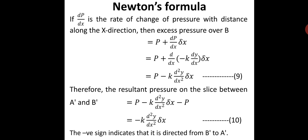The excess pressure over section A equals p, while the excess pressure over section B is p minus K times d²y/dx² times delta-x. Therefore, the resultant pressure on the slice between A-dash and B-dash equals p minus K times d²y/dx² times delta-x minus p. The p terms cancel, giving minus K times d²y/dx² times delta-x. The negative sign indicates that the pressure acts from layer B towards layer A.